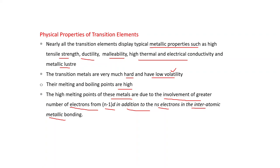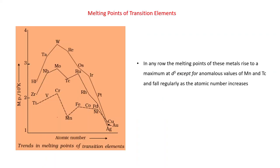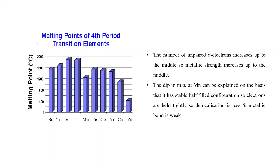You can see the melting points of these transition elements in this graph. In any row, it may be 3D series, 4D series or 5D series, the melting points of these metals rise to a maximum at d^5 except for anomalous behavior of Mn and Tc, and fall regularly as the atomic number increases. Up to d^5, number of unpaired electrons increases. That's why melting point will also increase. This is a bar graph showing melting points of the fourth period transition elements. The number of unpaired d electrons increases up to the middle, so metallic strength increases up to the middle. The dip in melting point at Mn can be explained on the basis that it has stable half-filled configuration, so electrons are held tightly, so delocalization is less and metallic bond is weak.